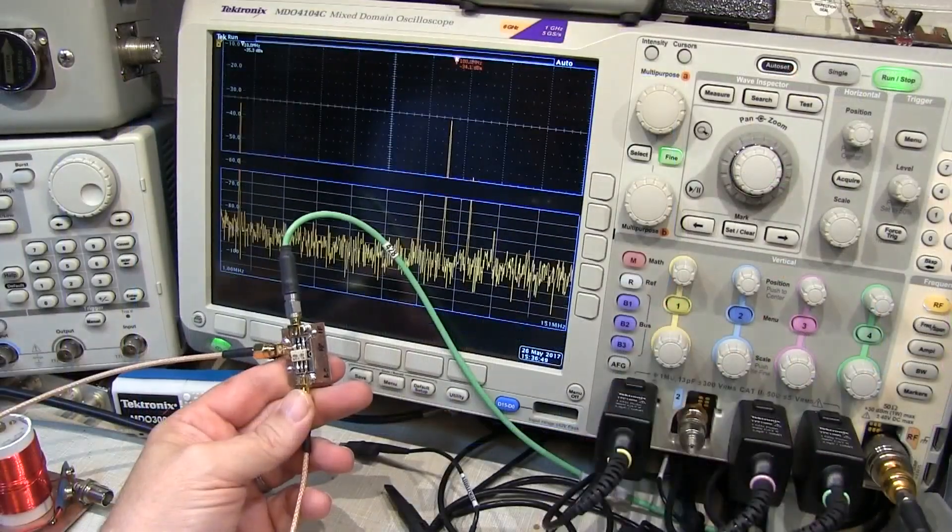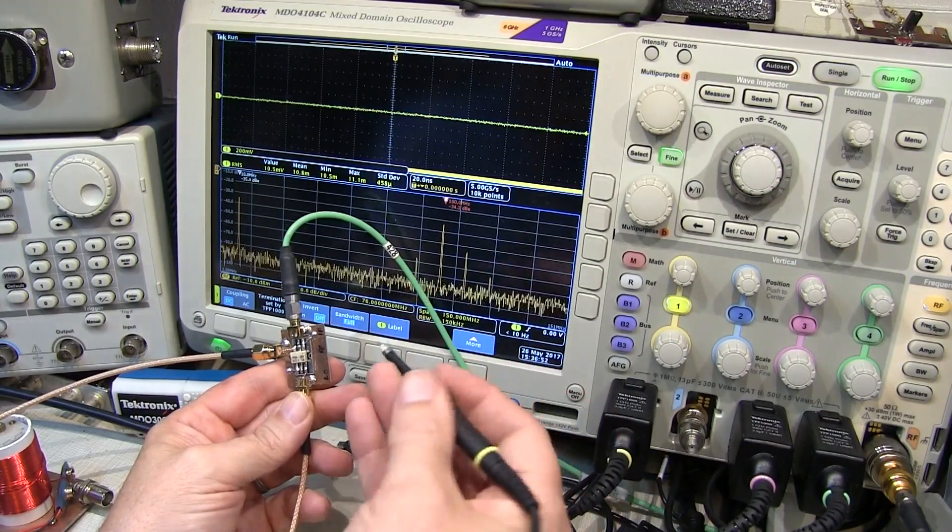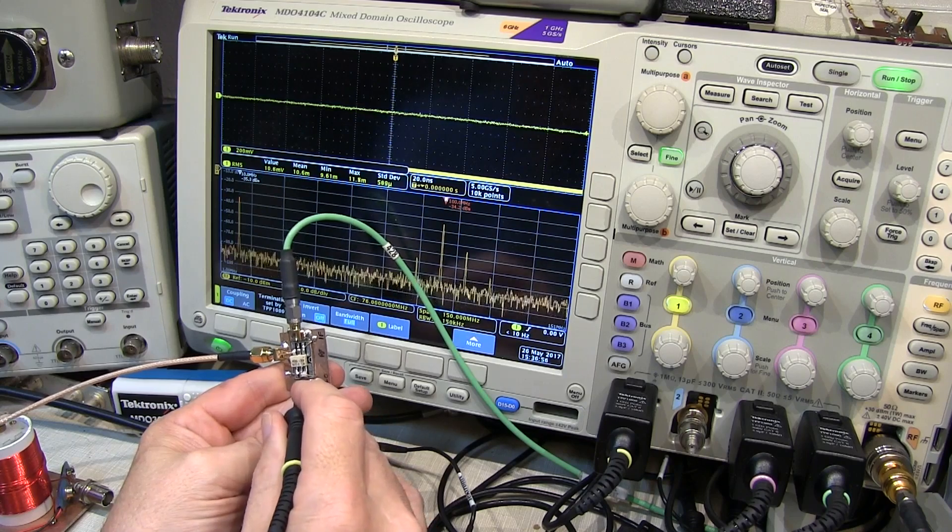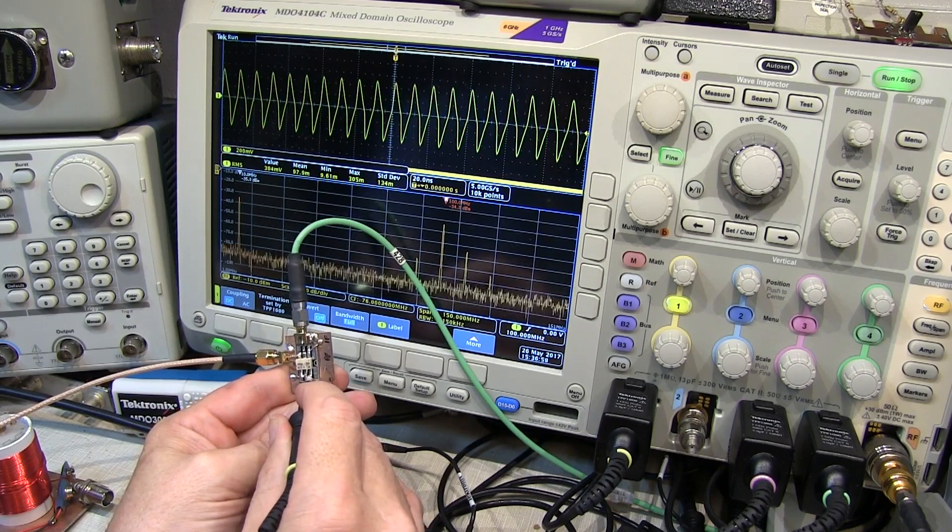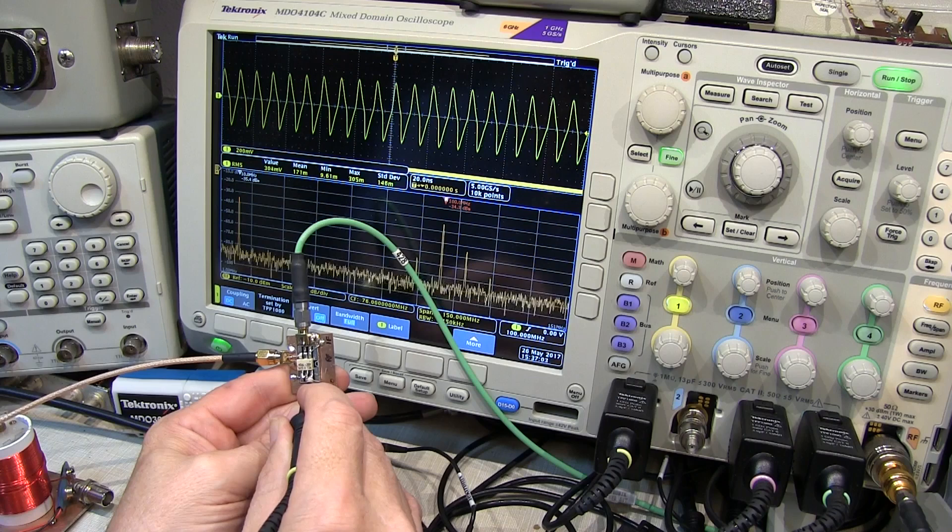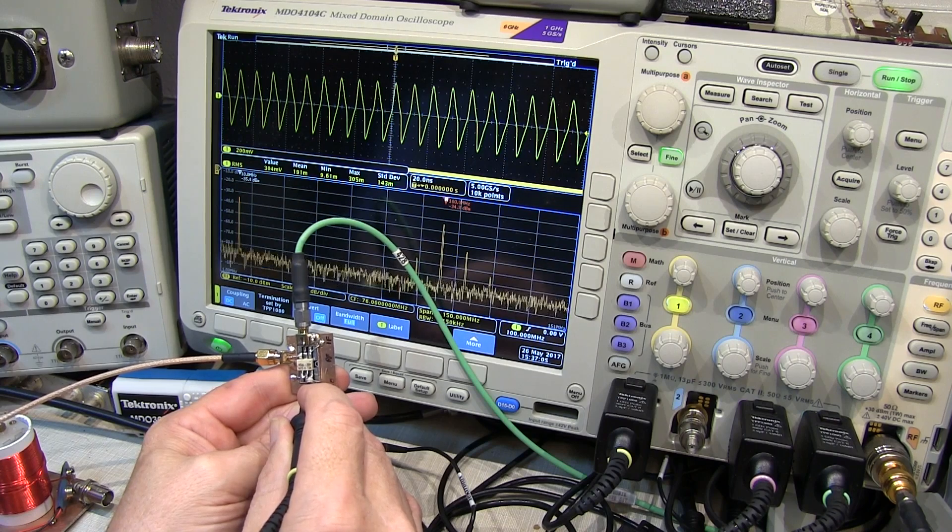All right, let's turn on scope channel 1 here, and bring my probe over. I've got a nice short ground lead on here, and let's measure that signal level. If we take a look at it, it doesn't really look sinusoidal, and that's to be expected because the load presented by a diode mixer is non-linear.